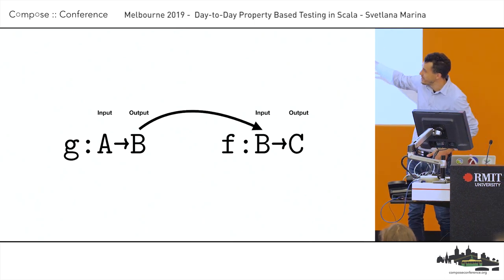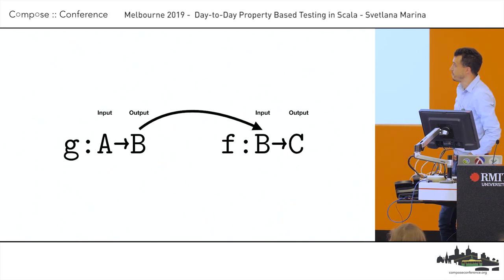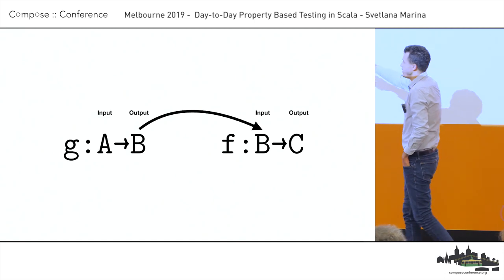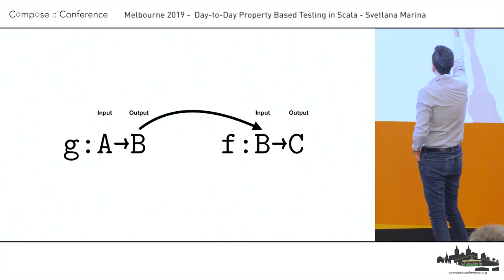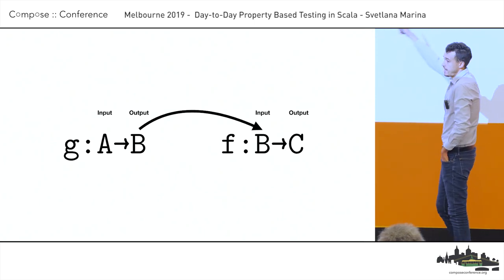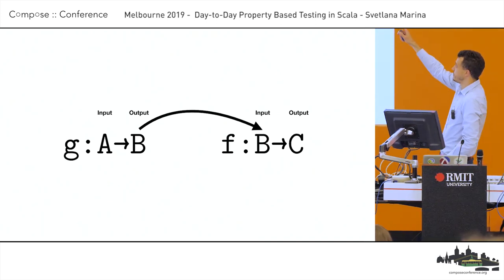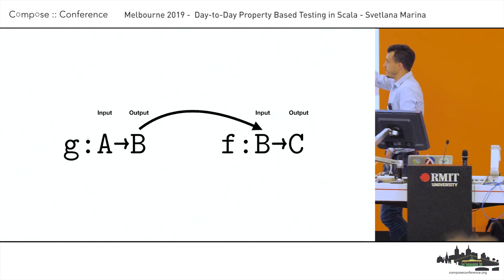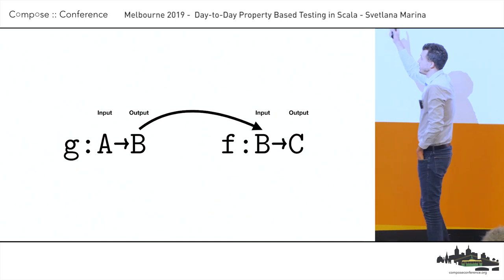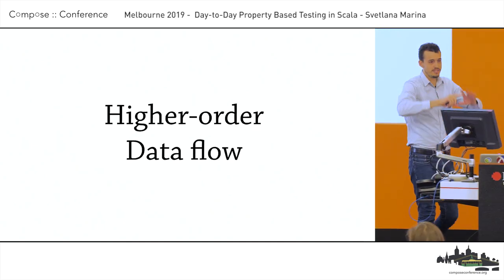Yet another way of looking at it is through the type signatures. If g has type a → b and f has type b → c, we can pass the output of g to the input of f because the b's match. There are extra annotations — inputs and outputs. By default everything is an output, and if you're to the left of an arrow, it's an input.